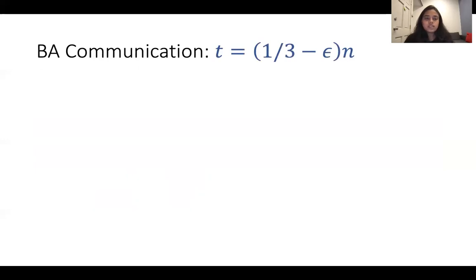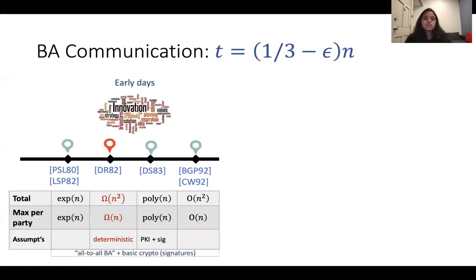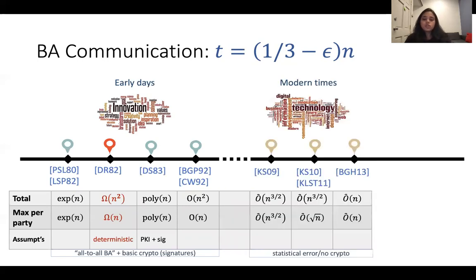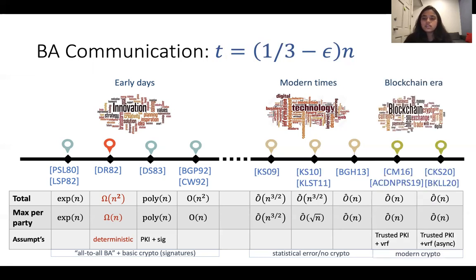To quickly recap what is known in the field of communication-efficient Byzantine agreement protocols: research began with the work of Pese, Shostak and Lampot in the 80s. Soon after, Delev and Raishuk established that for deterministic Byzantine agreement protocols all parties need to communicate at least quadratic many bits. About a decade later two papers achieved these bounds. About two decades later, results overcame this lower bound by designing sub-quadratic randomized Byzantine agreement protocols. More recently, with the advent of blockchains, results achieved the same communication using an entirely different technique.